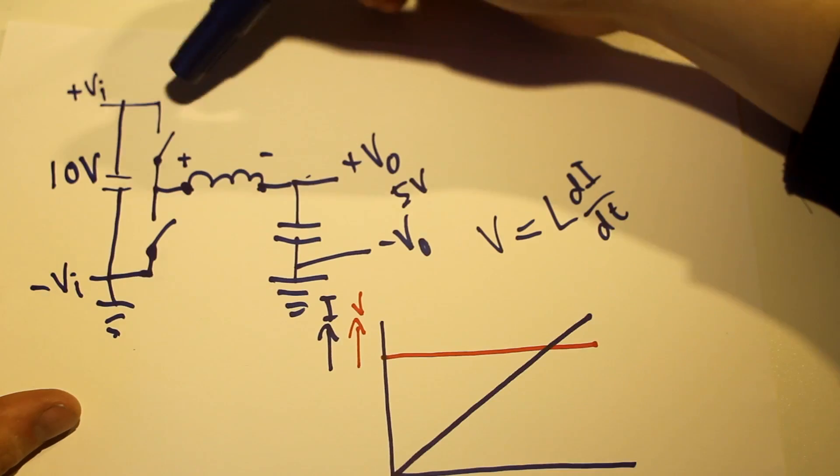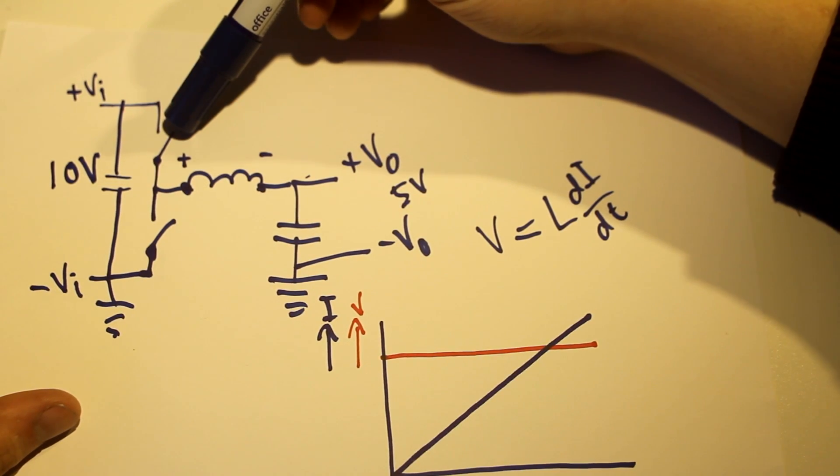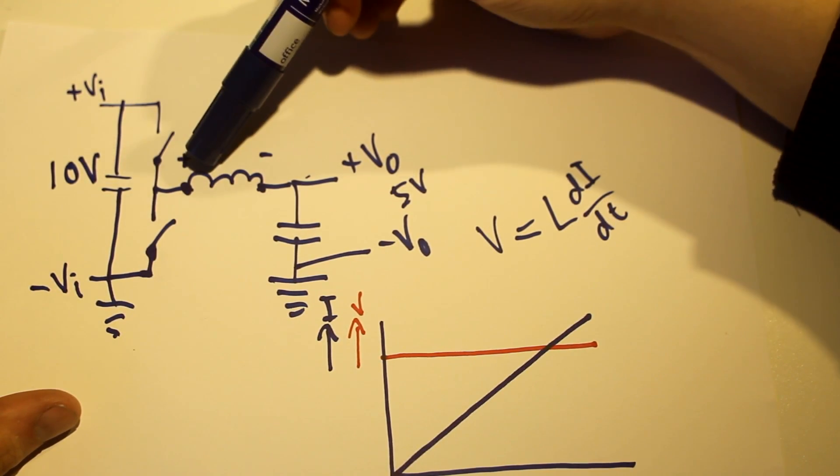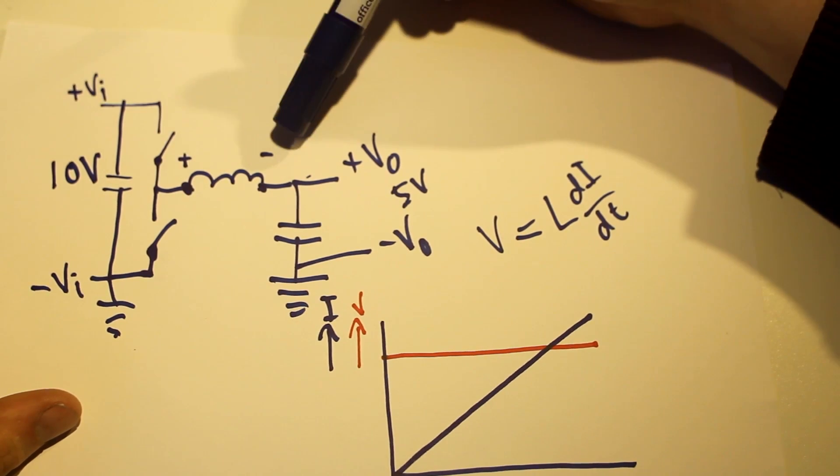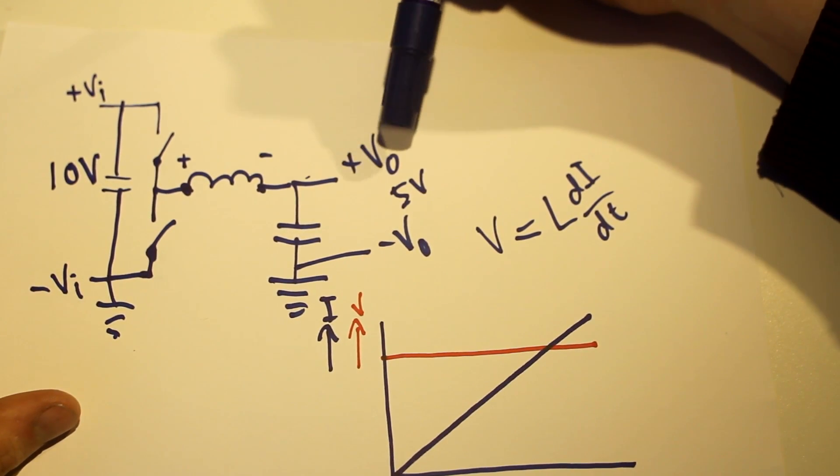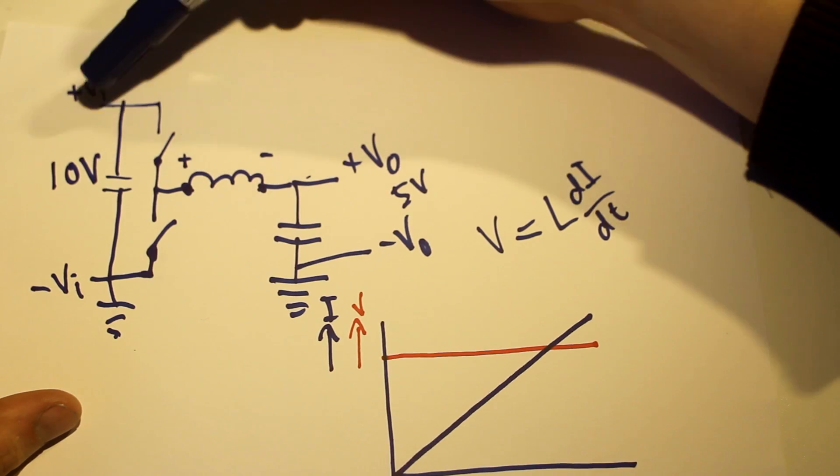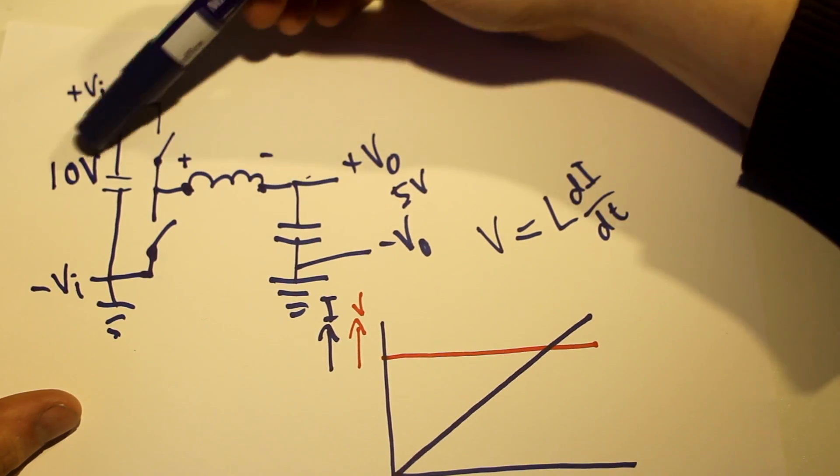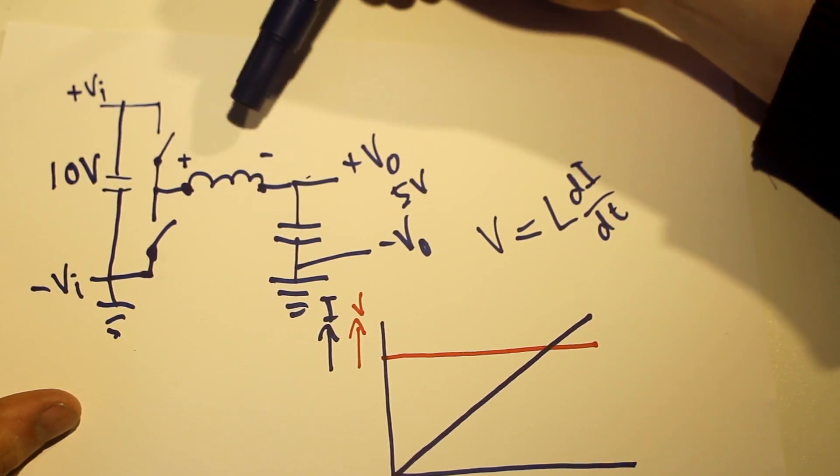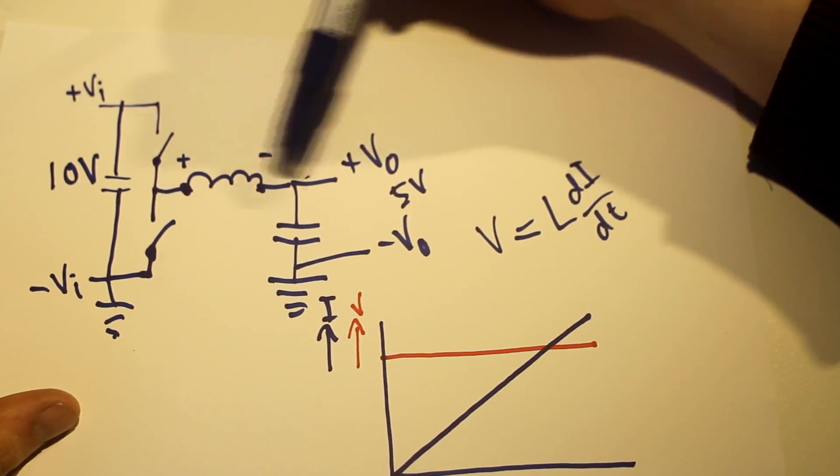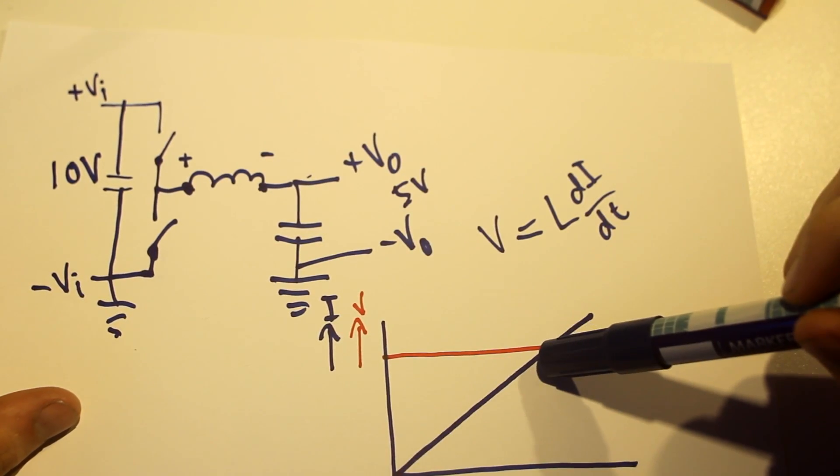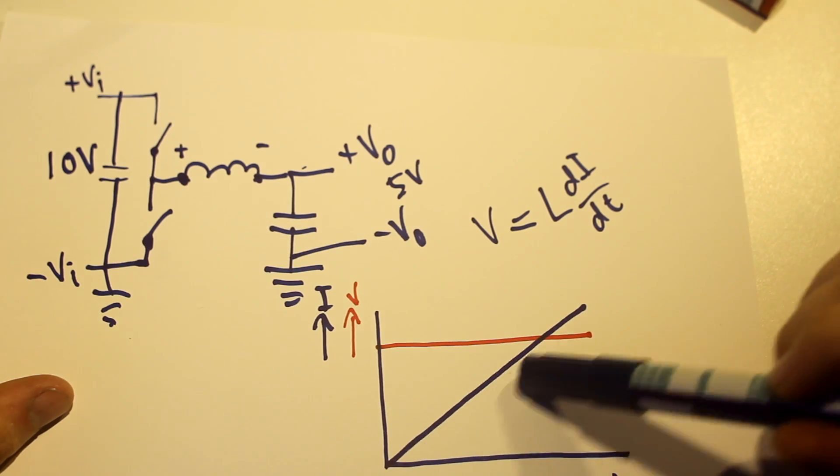So let's close this upper switch, which means that the positive side of the inductor is connected to Vi, and the negative side of the inductor is connected to Vo. There is now a constant voltage of 10 minus 5 equals 5 volts over this inductor. And this starts happening. The current increases linearly.